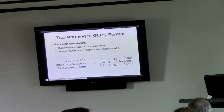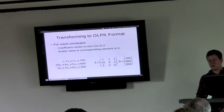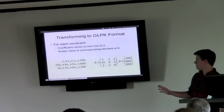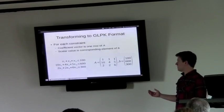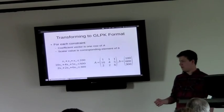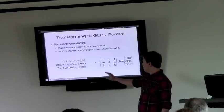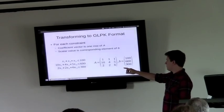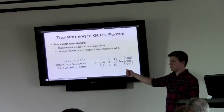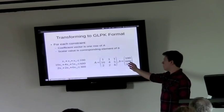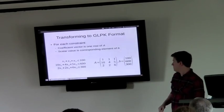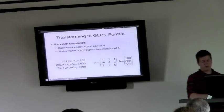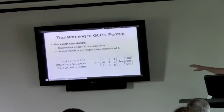So we want to take all these constraints and construct this A matrix and vectors. So we can go to GLPK. So what we can notice is that for each constraint, each constraint defines one row of A. So X1 plus X2 plus X3 is 1, 1, 1, and A, and so on. And then the scalar value in that constraints goes into the B vector.